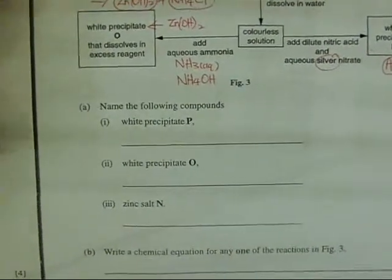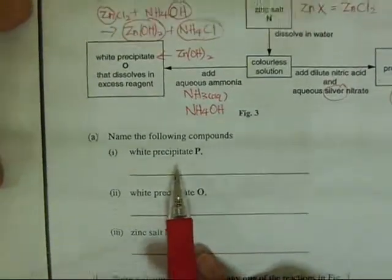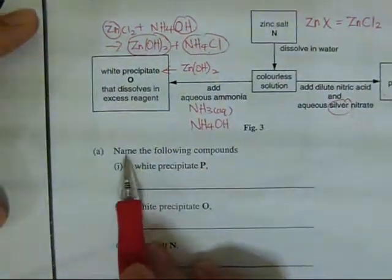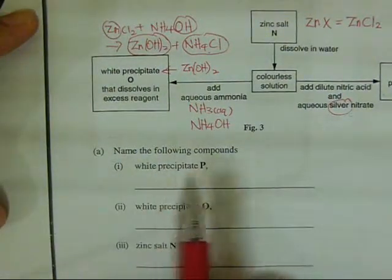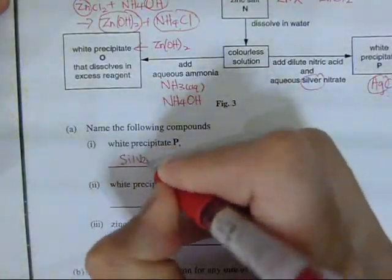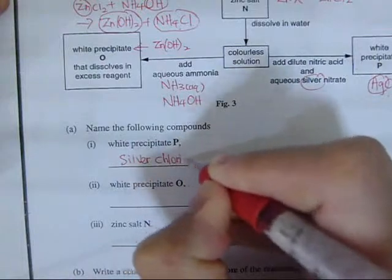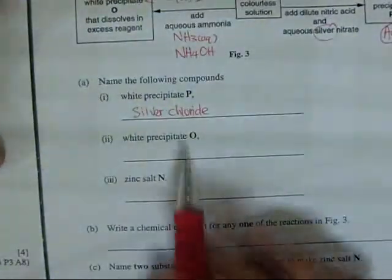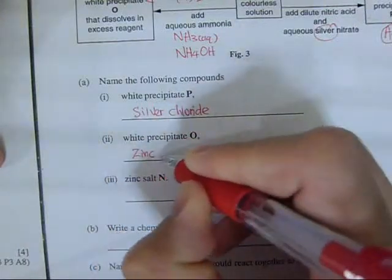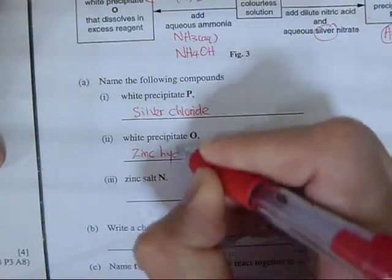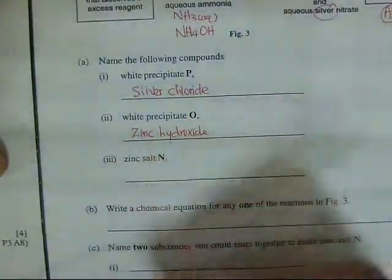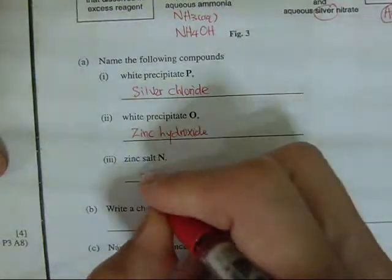Now let's name the compounds. The question asks to name the following: white precipitate P — that is silver chloride, so you write silver chloride. White precipitate O — that is zinc hydroxide. Zinc salt N — that would be zinc chloride.